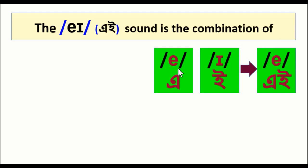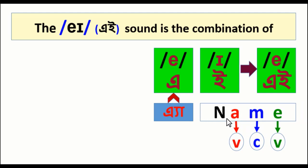Look at the sign. The /eɪ/ sound is the combination of /e/ and /ɪ/. In the word 'name': 'n' is a consonant, 'a' is a vowel, 'm' is a consonant, 'e' is a vowel. When a vowel follows an active consonant with another vowel after it, the first vowel is pronounced as /eɪ/.